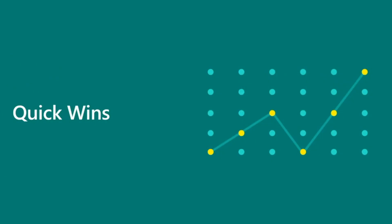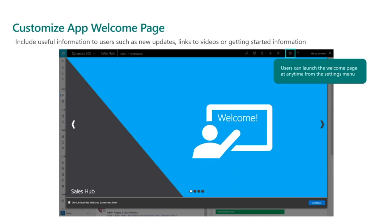Next, I want to talk about some of the quick wins you can implement as you transition to Unified Interface to enhance your user experience. First and foremost is customizing an app welcome page. As your users start using Unified Interface, one of the very first screens they'll see is your welcome page. Use it to provide useful information on updates you've configured, or include links to videos, how-to guides, or getting started tutorials.